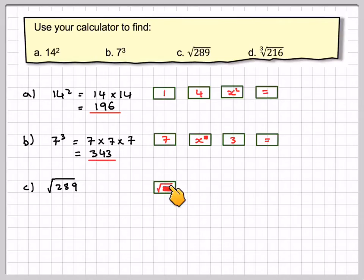So that's going to be, there's that square root sign, 289, and then equals, and we get the answer 17. Now finally,